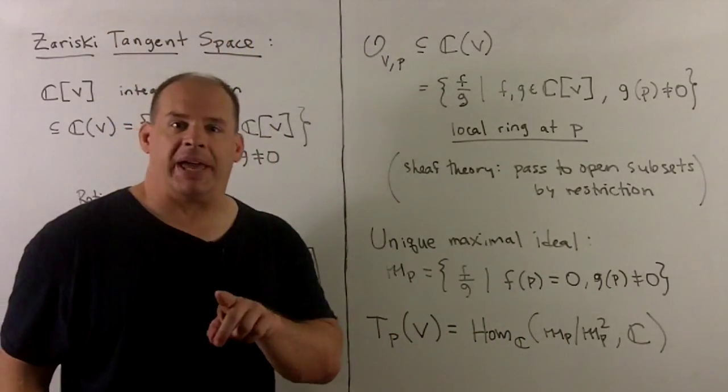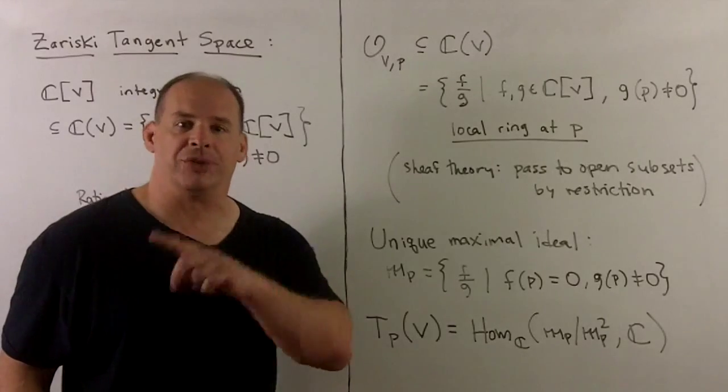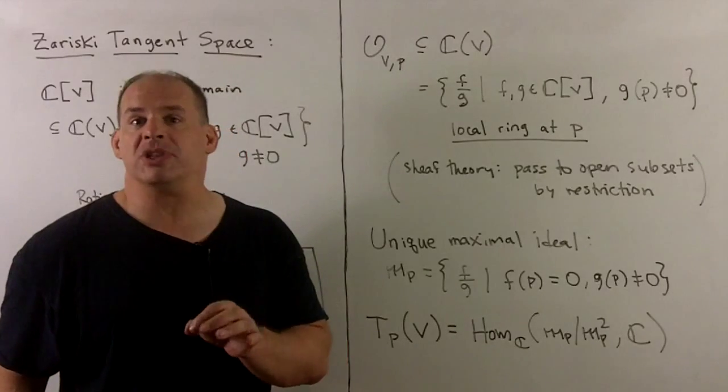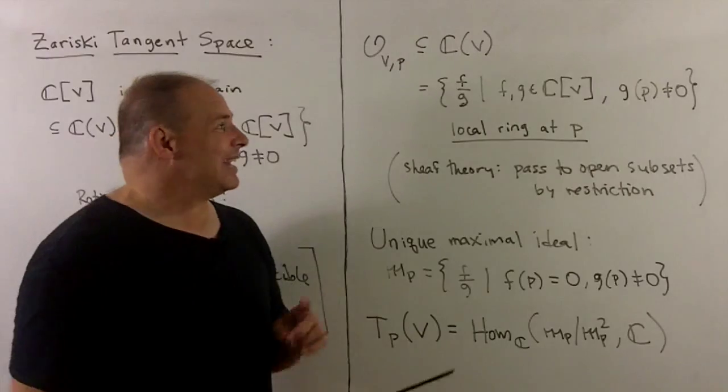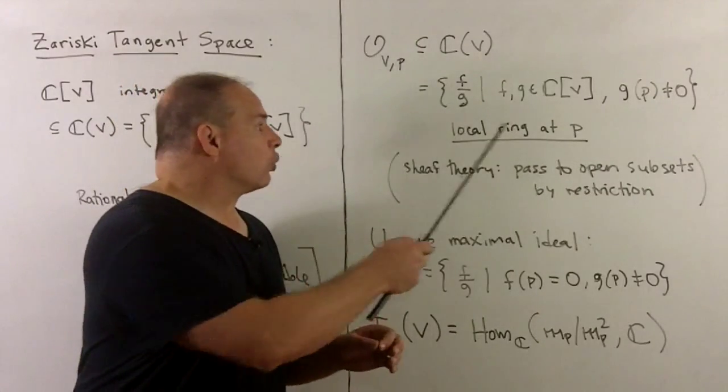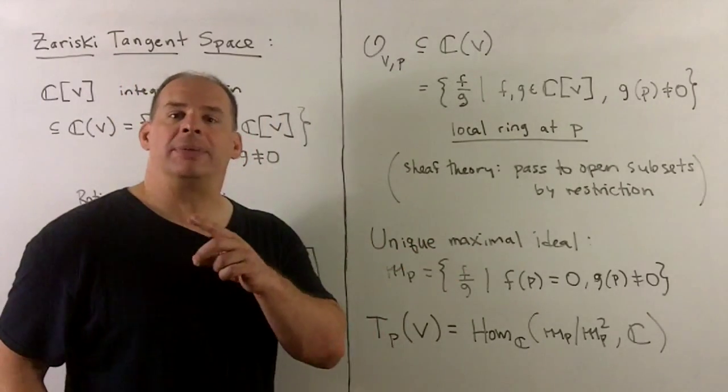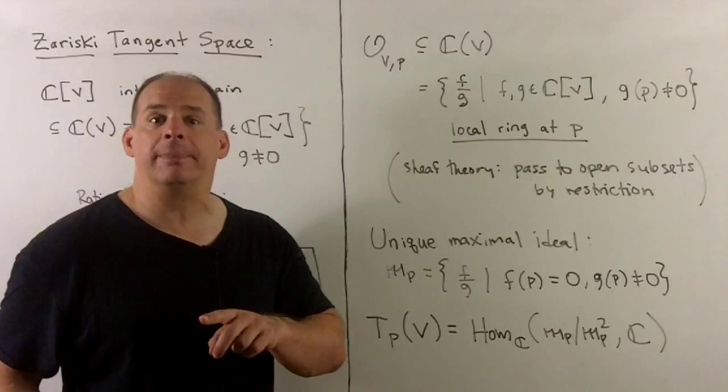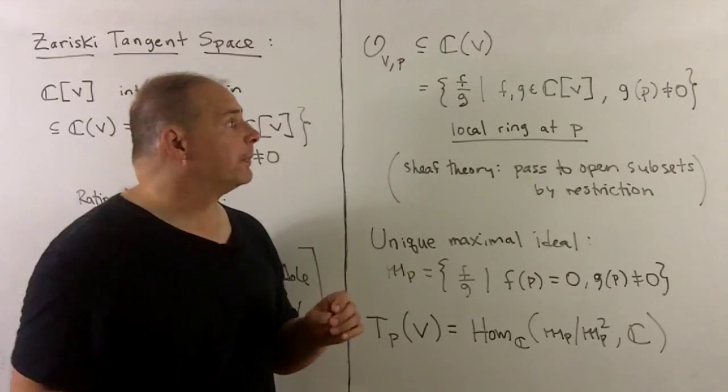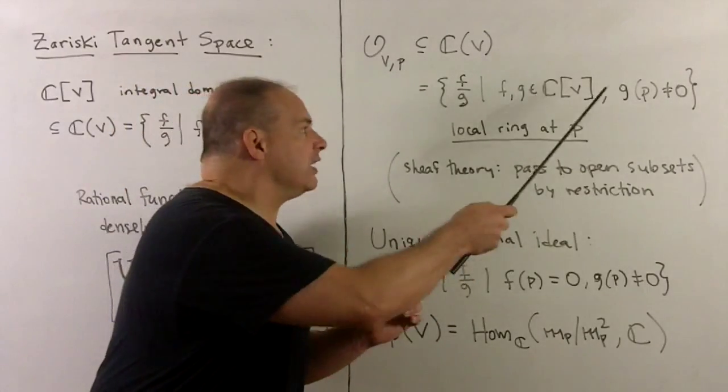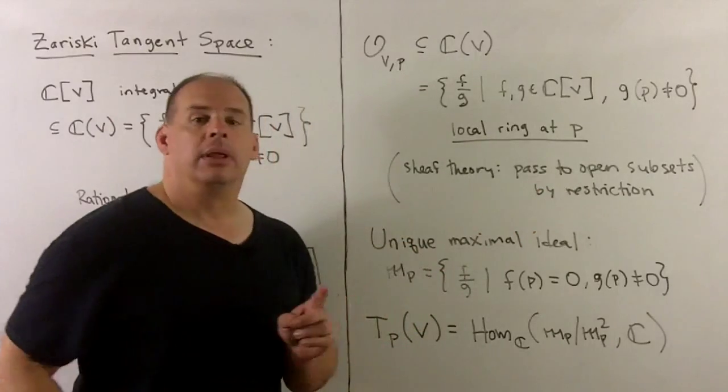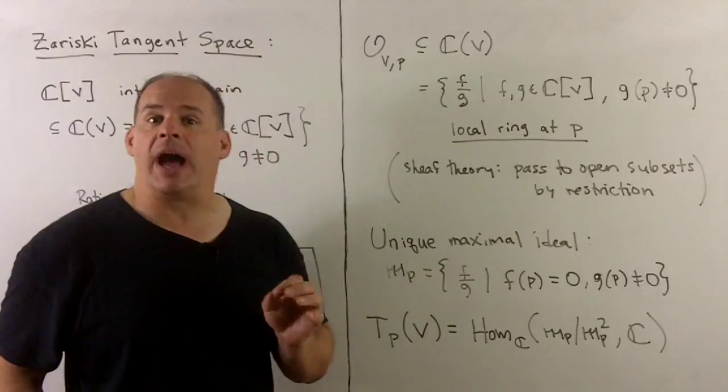If we want to talk tangent spaces, I need a large collection of functions. Before it would have been smooth functions on V. Now, I want to consider the local ring at P—the subset of rational functions on V which are actually defined at P. All we want here is that G(P) be nonzero. This space is big enough to do algebraic geometry.